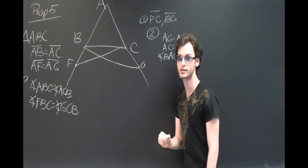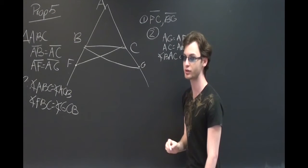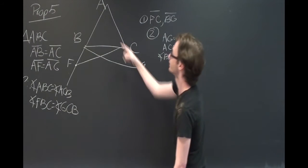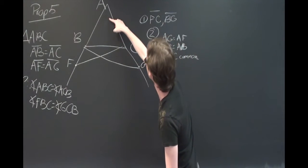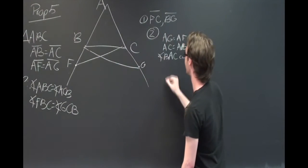And so now that we have two legs and the angle between them equal to each other, we know the entire triangles are equal to each other. That is, triangle AFC and triangle AGB are equal to each other.